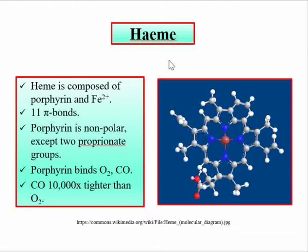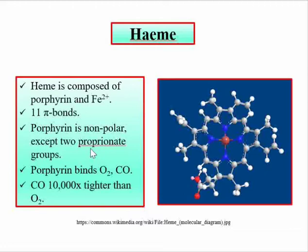Heme is composed of a porphyrin ring and an iron center. It is the non-protein prosthetic group of myoglobin. The porphyrin ring has 11 pi bonds and is non-polar and hydrophobic, except for two propionate groups which are polar. The iron center is surrounded by four nitrogen centers from four pyrrole rings.